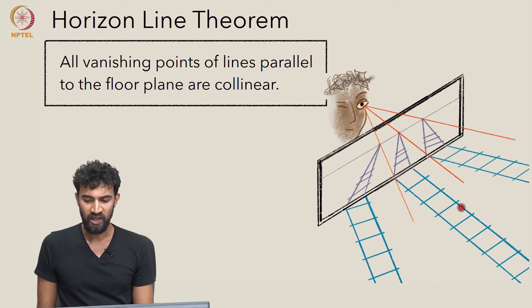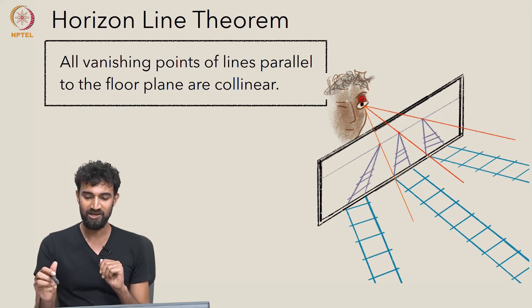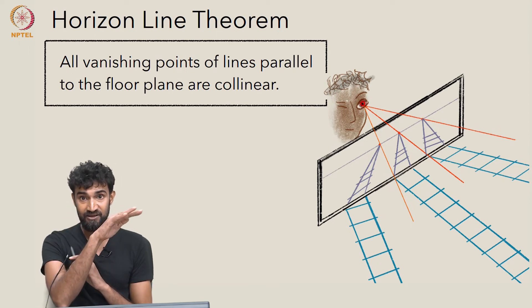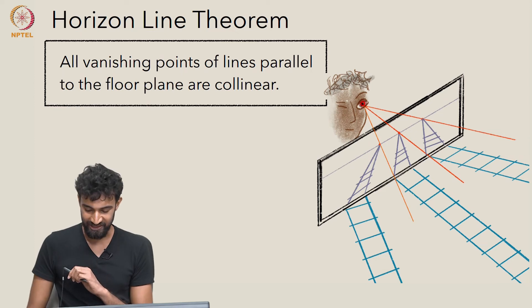So basically what I'm trying to get at is a small question. What is the collection of all lines from your eye which are parallel to the ground plane? What is that collection going to look like?